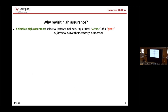The second question is: how do we select and how much do we select to verify? This process is called selective high assurance. It means you isolate small, security-critical WIMPs in giants and formally prove their security properties. How many do you pick and how large are they — 50k, 20k, 70k lines of code — is up to you, but you do it selectively.